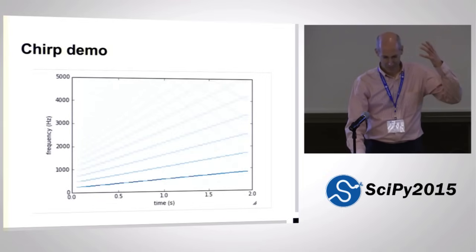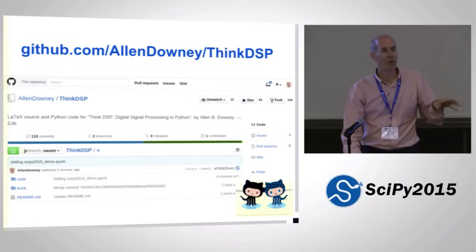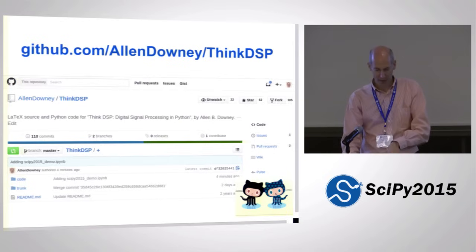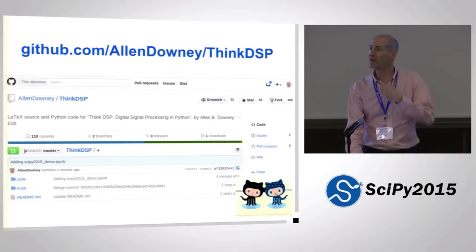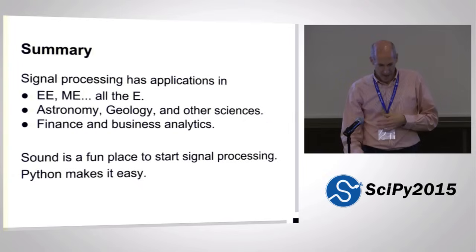We did the chirp demo. We did the convolution demo. All of the code for both the book and everything that you just saw is all in this GitHub repo. And again, I'm kind of early into this project and would love collaborators to send me corrections, add new material, whatever you want to do with it.